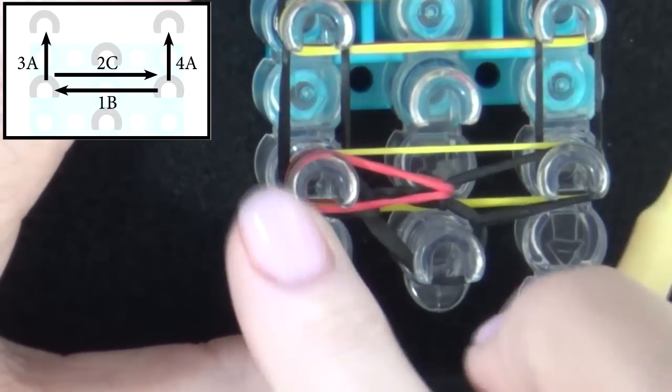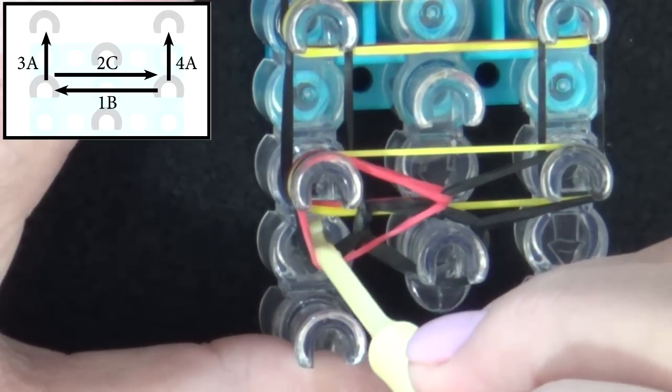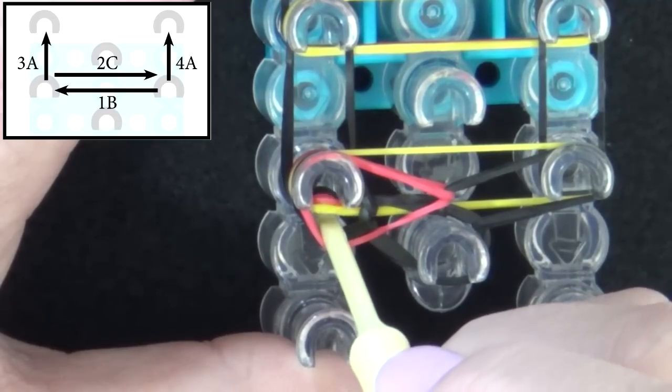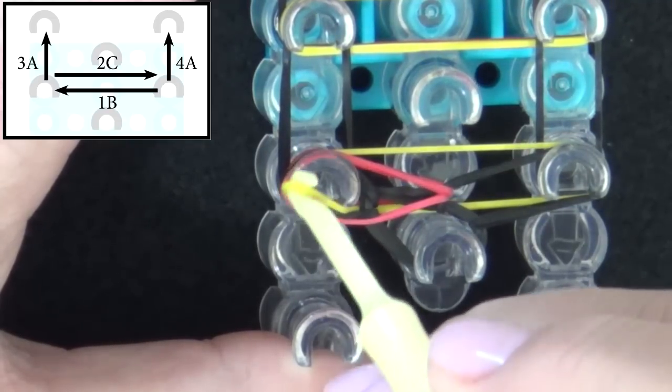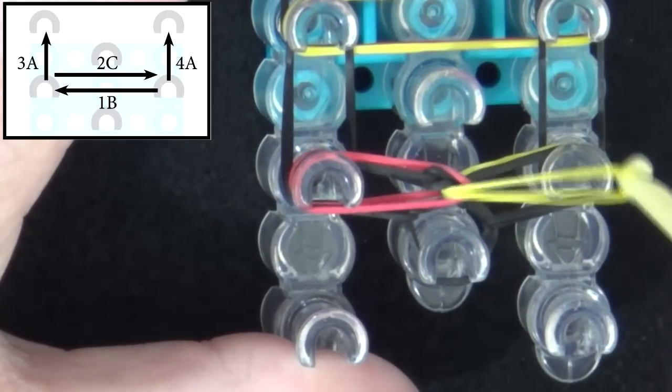Number two will be grabbing the C band and pulling it to the right, so you pull all the bands above the C band back, get the C band on your hook, and you pull it to the right.